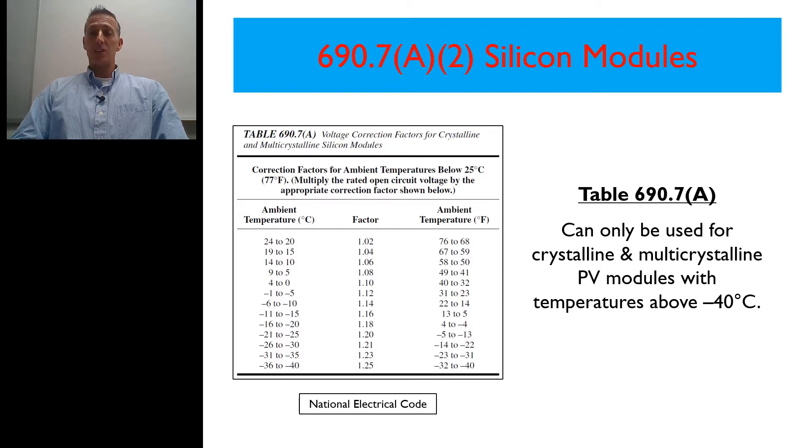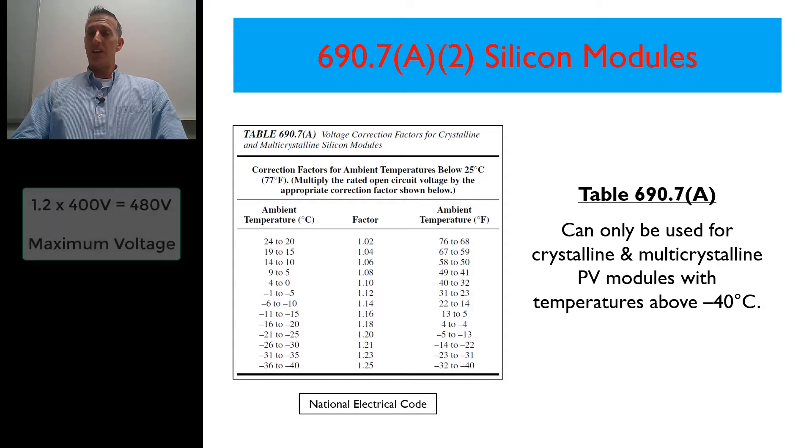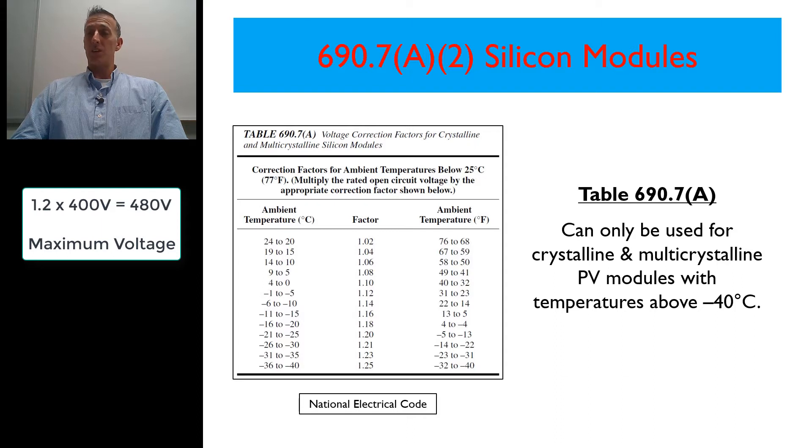At that lowest expected temperature using this table, we would take 1.2 times 400. And that would give us the total high or the maximum voltage that we'd expect to see out of that system. So that's how we would use this table.